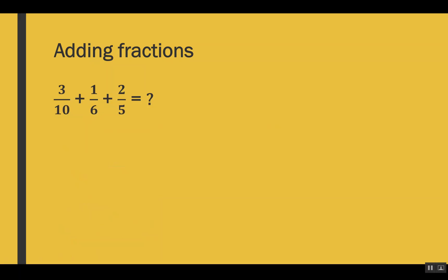Let's see another example — here we are adding 3 fractions, because in real life we may need to add two or more fractions. The process is the same: we take the LCM of the denominators, which are 10, 6, and 5. The LCM of these denominators is 30, so we make all denominators equal to 30.